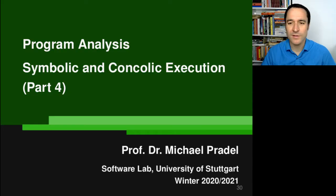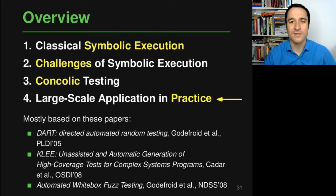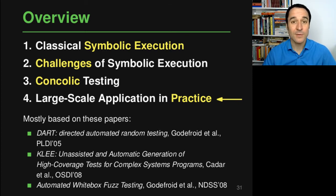Hi and welcome back to program analysis. This is video number four in this lecture on symbolic and concolic execution. In this short fourth video, I want to talk about one large-scale application of this idea of symbolic and concolic testing in practice. There are many other applications of these ideas, but I think it's pretty nice to show that these ideas do not just work on tiny examples but can also be used to find bugs in popular and very large programs.